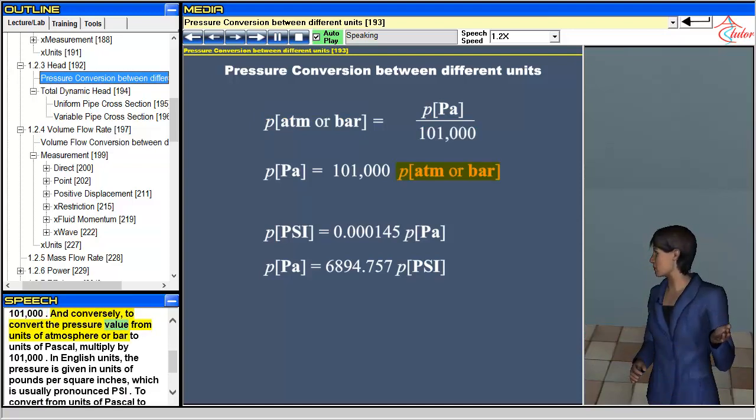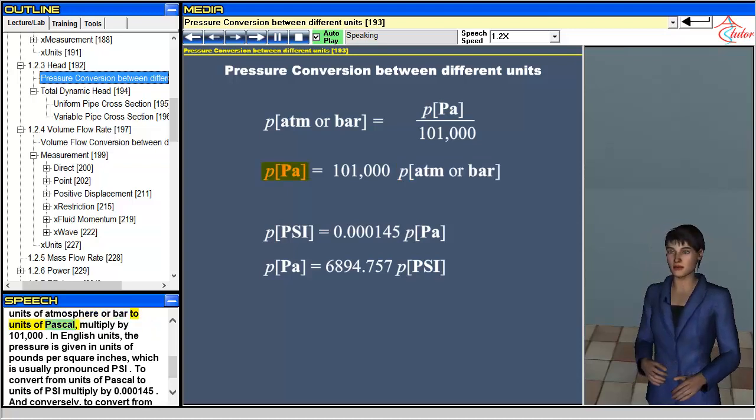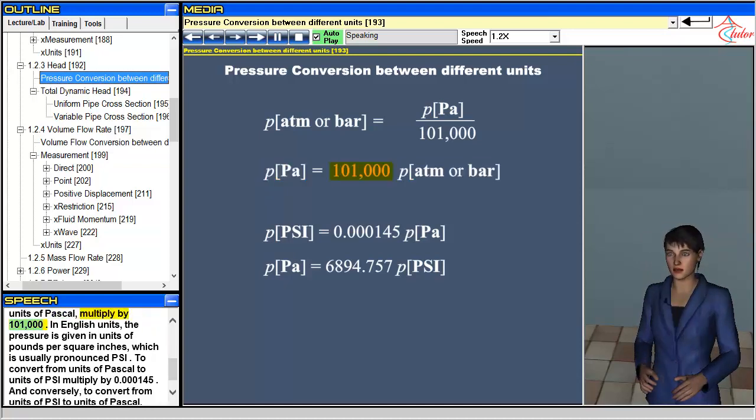Conversely, to convert the pressure value from units of atmosphere or bar to units of pascal, multiply by 101,000.